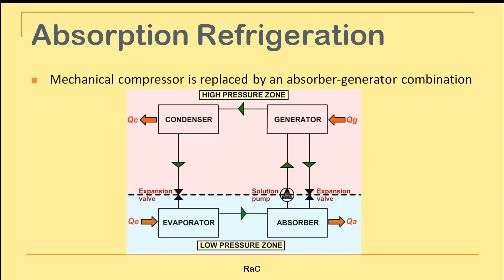The second type is the absorption refrigeration system, where the compressor is eliminated entirely. It is replaced by an absorber-generator combination. There is no requirement for external power — the generator can work with any low-grade heat source, such as waste heat from an IC engine or solar thermal energy. There are no moving elements in this type of refrigeration.